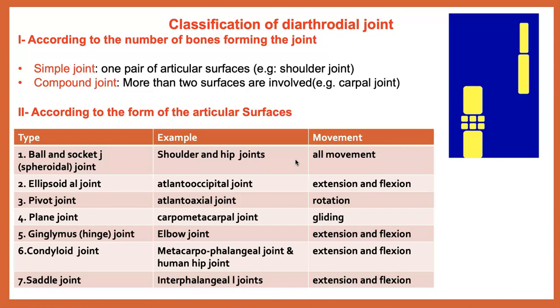We have the condyloid joint, as in the metacarpophalangeal joint, which allows extension and flexion. And then the saddle joint, like between the two phalanges — the interphalangeal joint — which also allows extension and flexion.